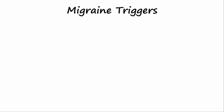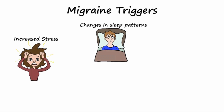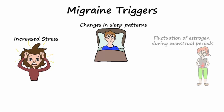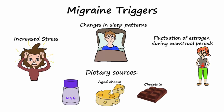Possible triggers of migraines include increased stress, changes in sleep patterns, and fluctuation of estrogen during menstrual periods. Dietary sources such as monosodium glutamate, aged cheese, and chocolate may also increase the risk for migraine headaches.